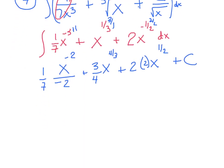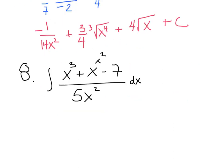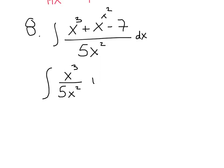Cleaning up — no negative exponents — I get negative 1 over 14x squared, plus 3 fourths times the cubed root of x to the 4th, plus 4 times the square root of x, plus c. Number 8: integrate x cubed plus x squared minus 7, all divided by 5x squared, dx. The rewriting step is very important — we make like a beaver and split, dividing every term by 5x squared.